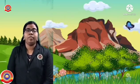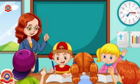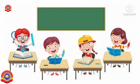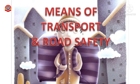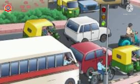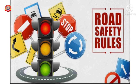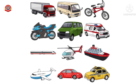Hello my dear little ones, welcome back to our previous class. I hope you all are doing well. Shall we start our today's class? Today we are going to start our last chapter. The name of our chapter is 'Means of Transport and Road Safety.' In this chapter we are going to study about transport and the road safety rules we have to follow while traveling on the road.